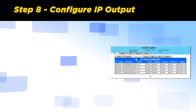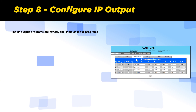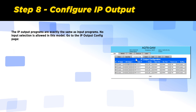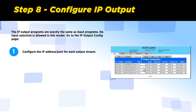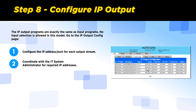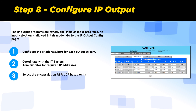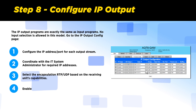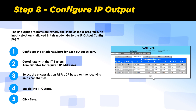Step 8: The IP output programs are exactly the same as the input programs — no input selection is allowed in this model. Go to the IP Output Config page. Configure the IP address and port for each output stream, coordinating with the IT system administrator for the required IP addresses. Select the encapsulation — RTP or UDP — based on the receiver unit's input capabilities. Enable the IP output and click Save. Now you are all set up. Thank you for watching.